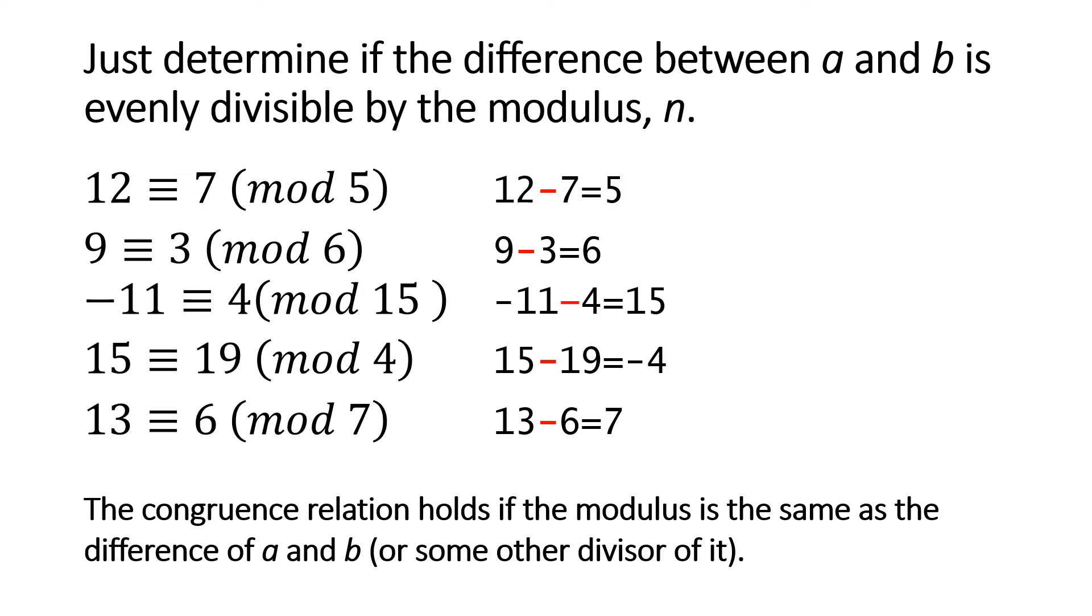And it would also be true if we had mod 3 or mod 2 because both of those are even divisors of 6. In the third case we have a negative number: minus 11 is congruent 4 mod 15. The way to understand that is minus 11 minus 4 is minus 15, and we don't worry about the sign.